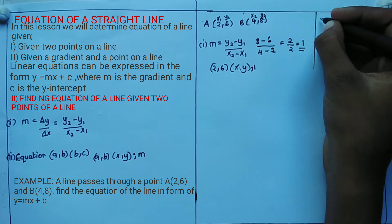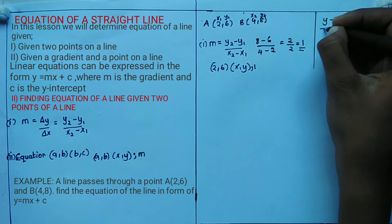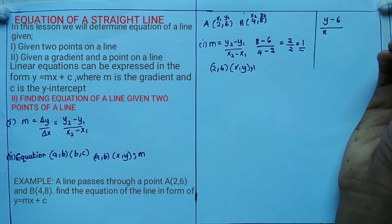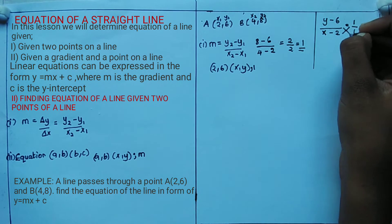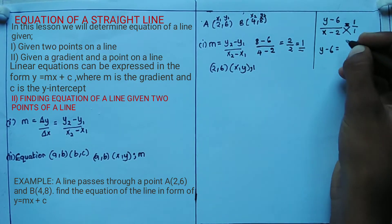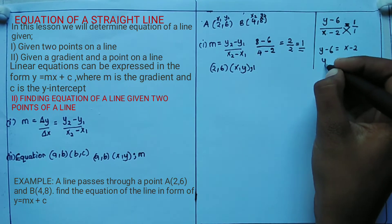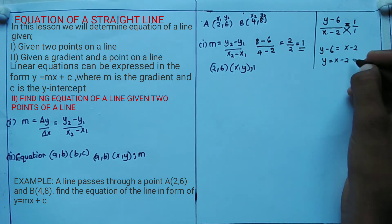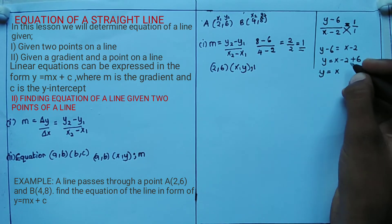I cross-multiply to get y - 6 = 1(x - 2), which simplifies to y - 6 = x - 2. Taking -6 to the other side, it becomes +6, so y = x - 2 + 6, giving the equation y = x + 4. That is the equation of the line.